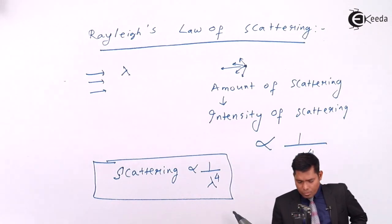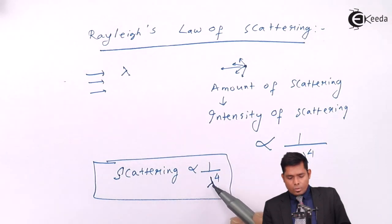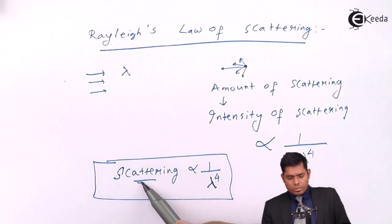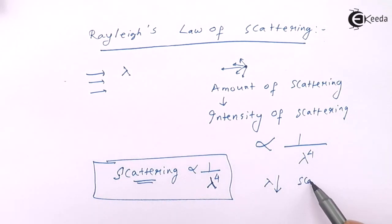This means that if the light which is having a lower wavelength, smaller wavelength, will be scattered most. Lambda less means scattering most.